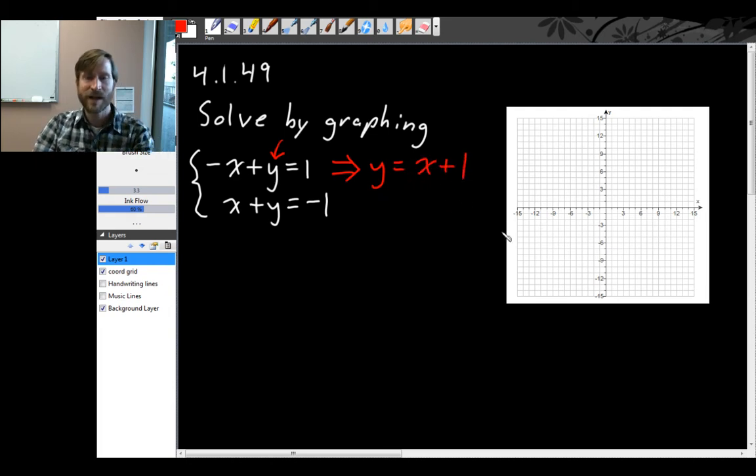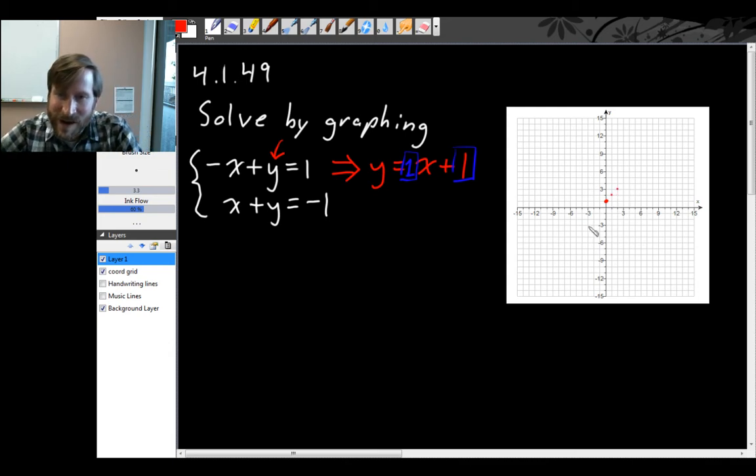So let's graph that. The y-intercept for this line is going to be 1, so we'll put our y-intercept there. And then the slope for this first line is the number multiplying x, which is 1. Remember, when there's nothing there, it's really a 1 that's there. So starting at the y-intercept, we go right 1 and up 1, right 1 and up 1, and so on. So we get a line that's something like this.